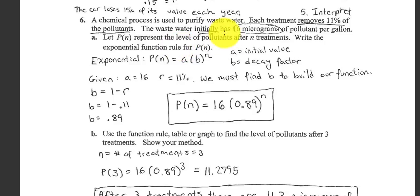So can we come up with an equation? The initial amount of waste is 16 micrograms. So A is 16. So in my equation, Y equals AB to the X. The A is the 16. The B is the decay factor. So it's not the 11%. We have to do B equals 1 minus the 11% to come up with my decay factor. There's my B. So I use the letters Y and X, but in the lab, they use P and N. It's no big deal.